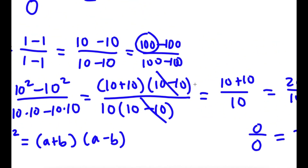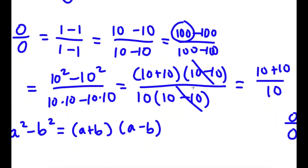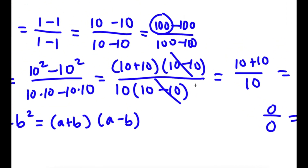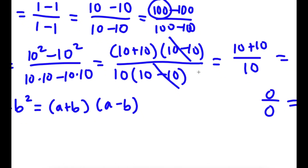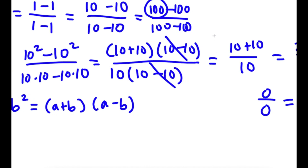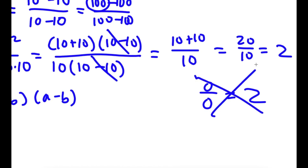Obviously, 0 over 0 is not equal to 2. The mistake in this proof is right here, when I canceled out 10 minus 10 over 10 minus 10. What is 10 minus 10? It's 0. So I'm technically canceling out 0 and 0. Remember, 0 over 0 is not equal to 1. I can't actually cancel these two out because that's implying that 0 over 0 is 1, which it's not. So that's the mistake in this proof, and 0 divided by 0 is not 2.